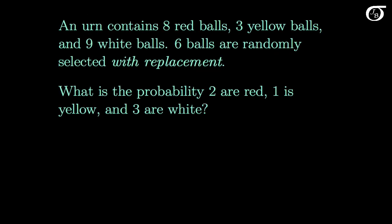Let's look at another example. An urn contains 8 red balls, 3 yellow balls, and 9 white balls. 6 balls are randomly selected with replacement. What is the probability 2 are red, 1 is yellow, and 3 are white? The with replacement aspect is important here. If we put the ball back and shake it up before randomly selecting again, the individual trials are independent, and the probability of getting a red, yellow, or white ball stays constant through the different trials. So the conditions for the multinomial distribution are satisfied.